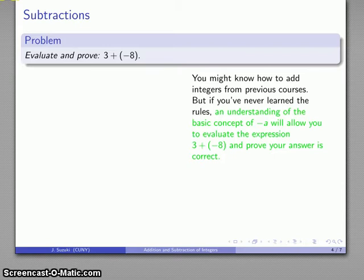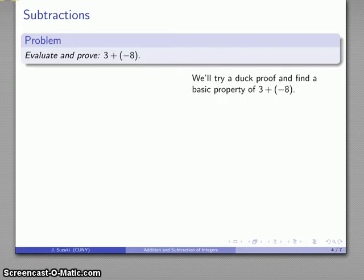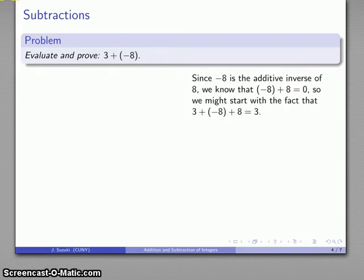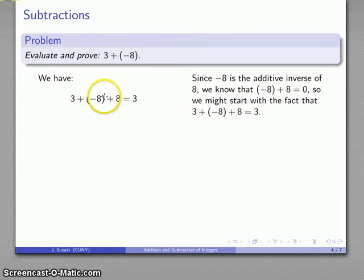Consider this problem. We want to evaluate and prove a particular statement. You might know from previous courses how to add integers, but imagine that you've never actually learned these rules and you're being exposed to these concepts for the first time. As long as you understand what the concept of negative 8 means, evaluating this is not a problem. We might want to try a duck proof. The idea is that we'd like to say something that involves the expression 3 plus negative 8. The negative 8 gives us problems, and the one thing I know is that negative 8 is the additive inverse of 8, so the additive inverse of 8 plus 8 gives me 0. So 3 plus negative 8, if I add 8 to that, these two terms add to 0, and this entire expression simplifies down to 3.